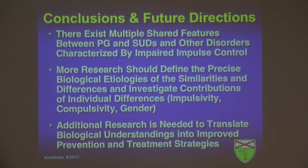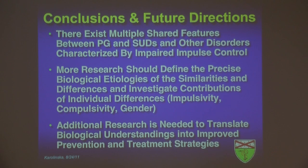In summary, there exist multiple shared features between pathological gambling and substance use disorders, as well as other disorders characterized by impaired impulse control. We believe more research should help define the precise biological etiologies of both similarities and differences between the disorders, and investigate clinically relevant individual differences such as those related to impulsivity, compulsivity, and gender. Taking this information to the next level would involve translating it into improved prevention and treatment strategies and taking those strategies out into the community to help a greater number of people.